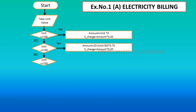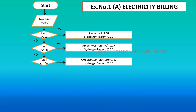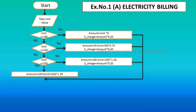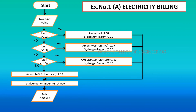If the second condition is no, we check the next decision: unit less than or equal to 250. If true, amount = 100 + (unit − 150) × 1.20, and subsidy charge = amount × 0.20. If this condition also fails, then amount = 220 + (unit + 250) × 1.50. The total amount = amount + subsidy charge. The output will display the total amount, and then the program stops. This is the electricity billing flowchart.